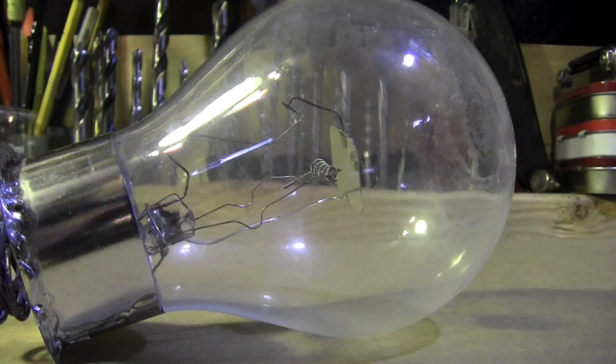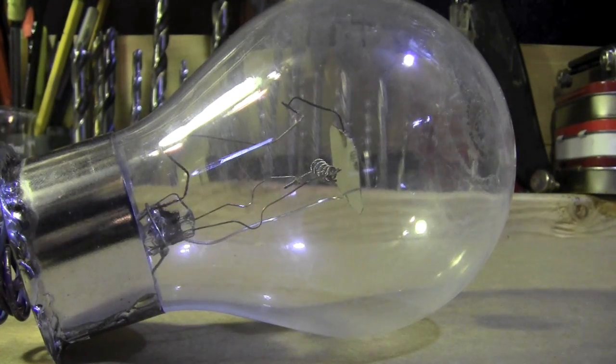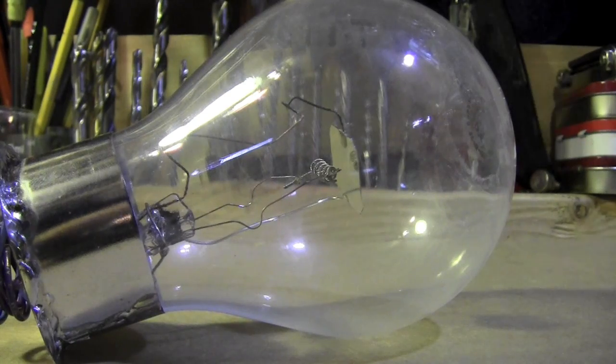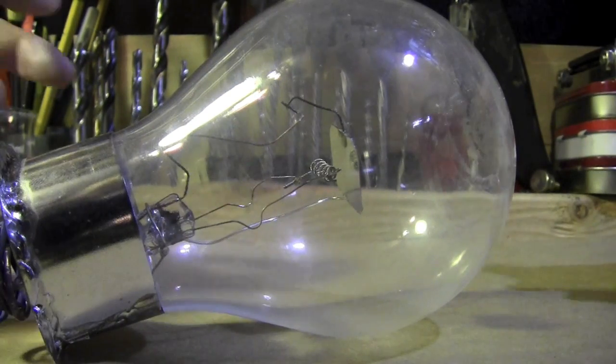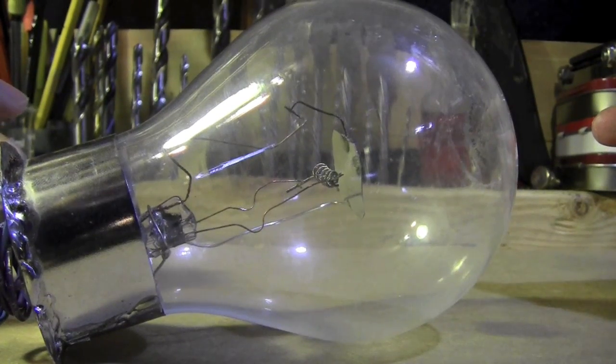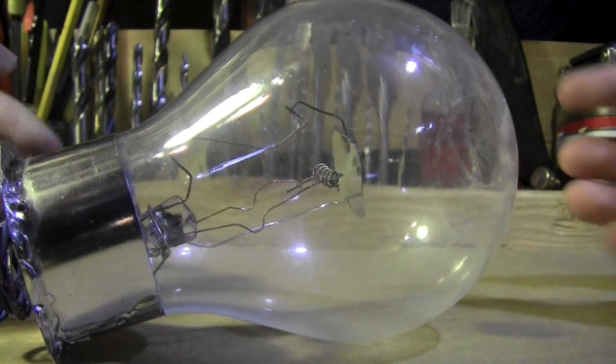I just got finished. This is the tungsten rectifier/diode that I'm working on. I still have to get it vacuum sealed with the air removed, which I'm still figuring out. That's going to be a big thing, but it's made out of a three-way light bulb.